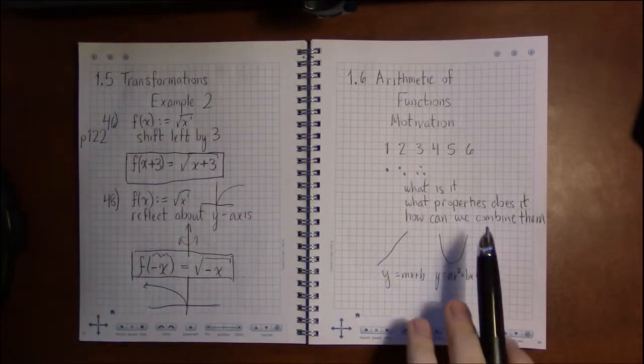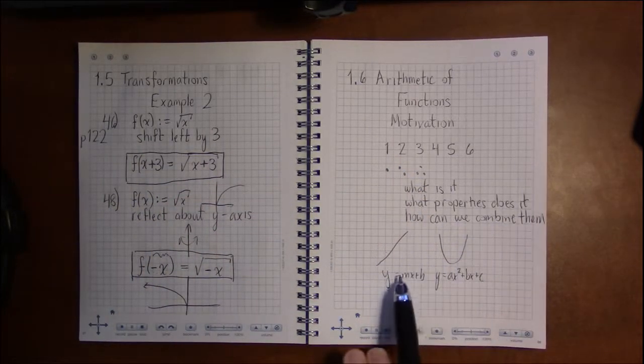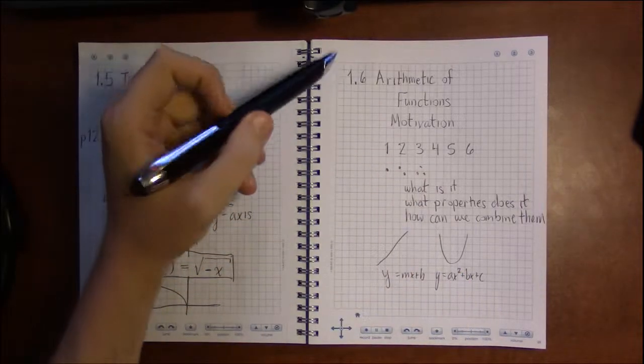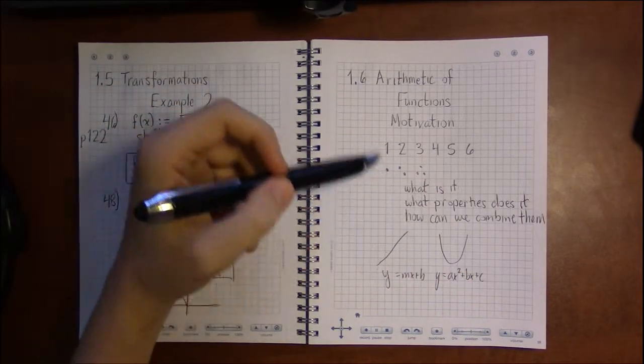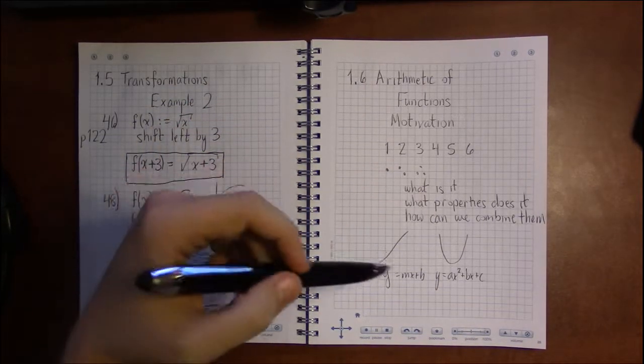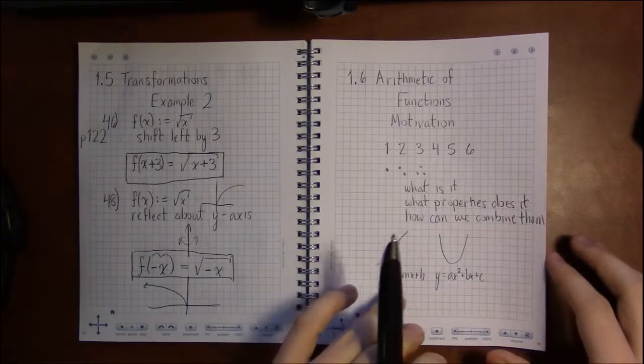How can we manipulate them, an individual function, by shifting and translating it around? And now in section 1.6 we're going to do a kind of arithmetic of functions. We're going to be combining functions together.